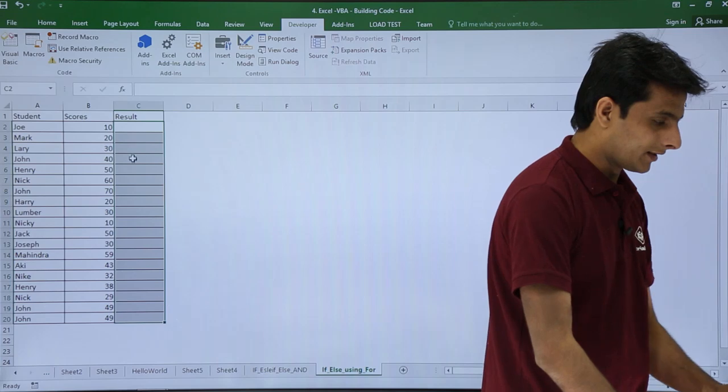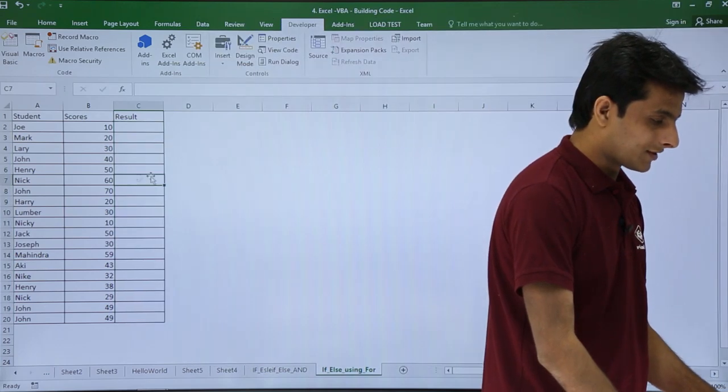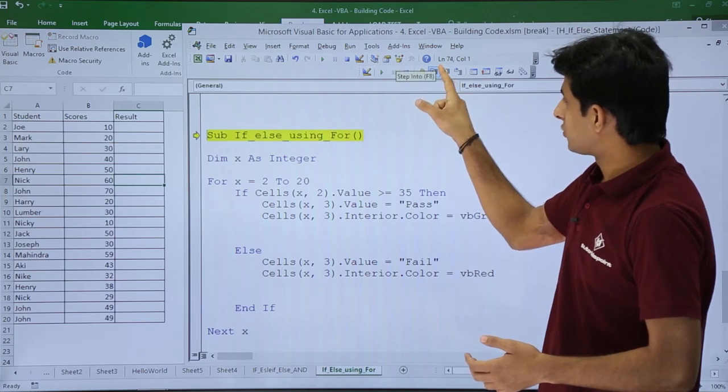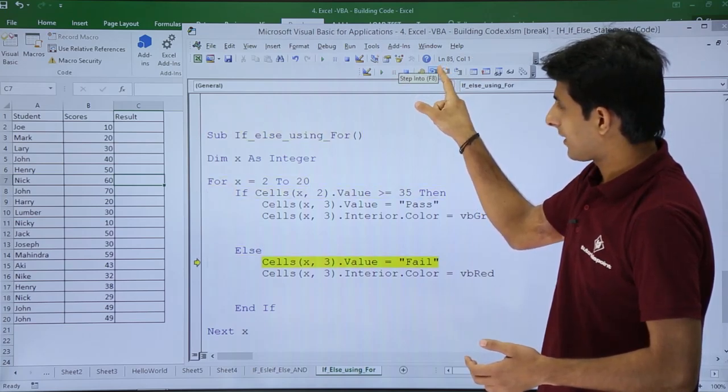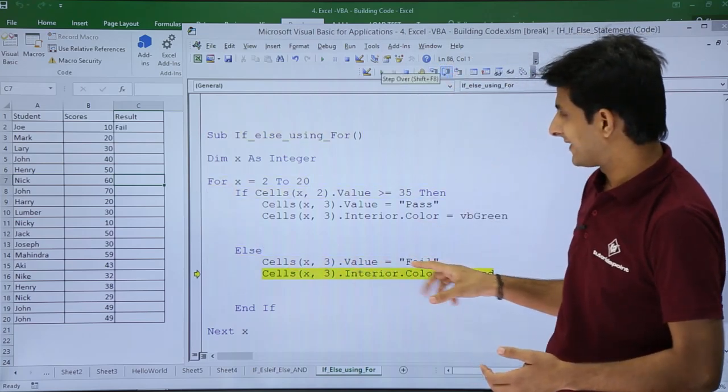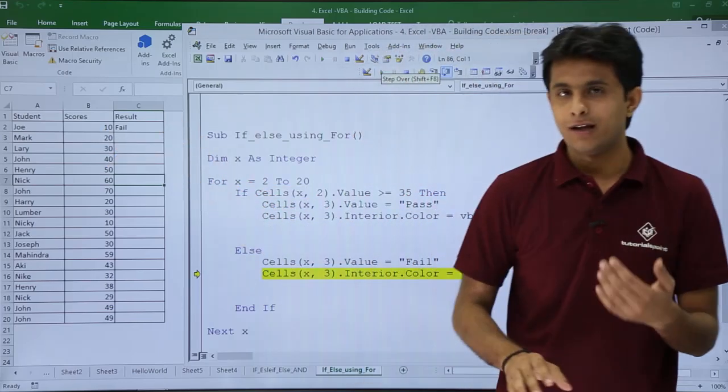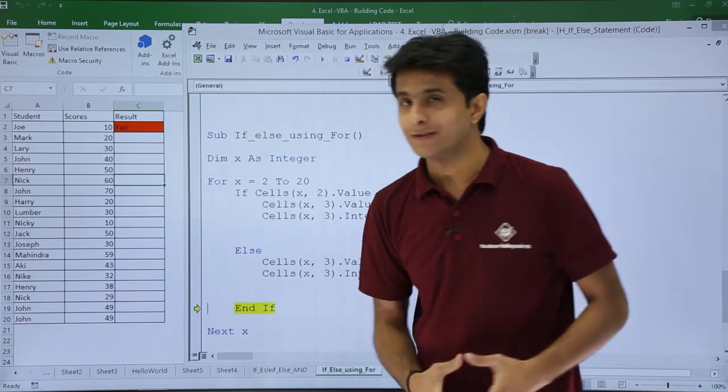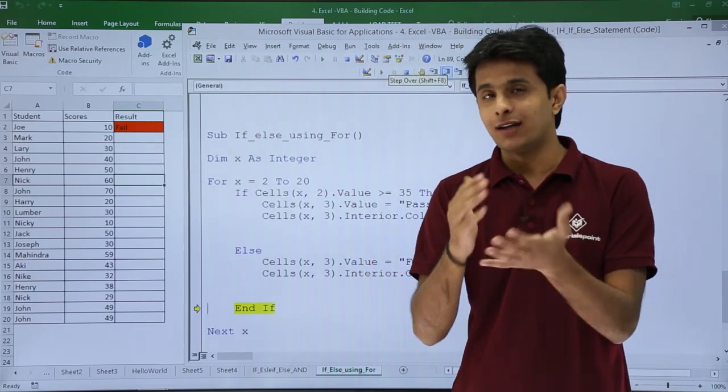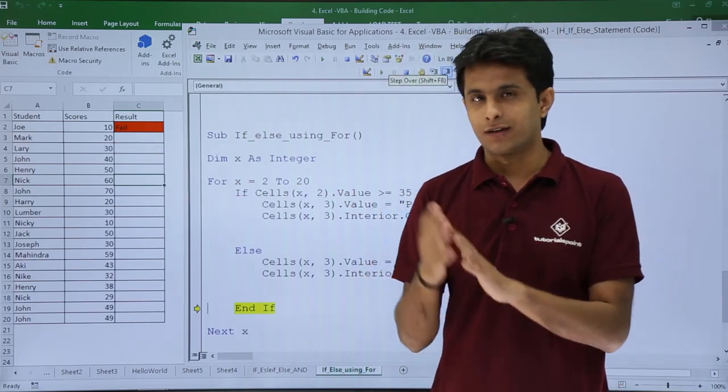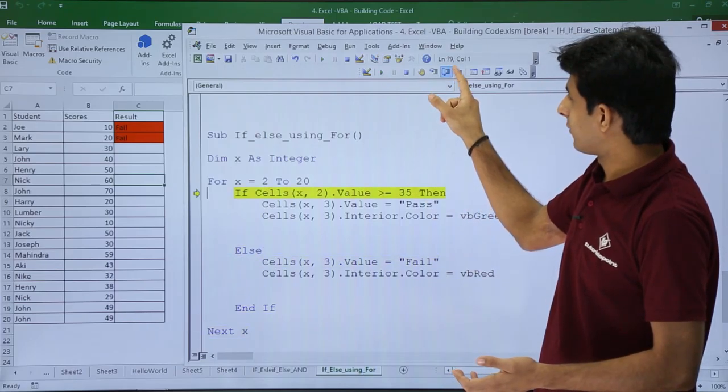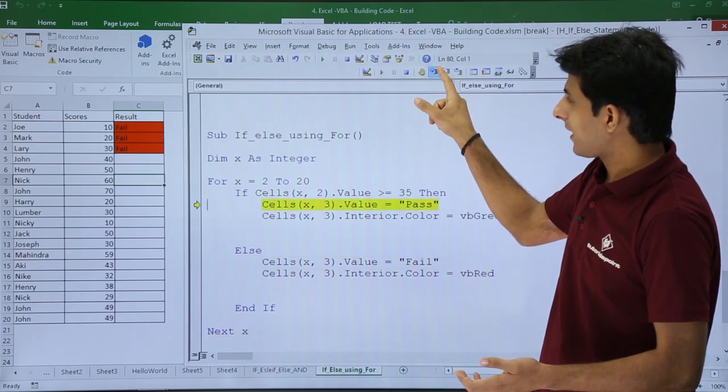I'll delete the result and execute this step by step. Step into, first line is executed - 10 is given as fail with interior color as red. You see the color is given as red, so I can easily understand red color means fail, green color means pass. If I execute again step by step, the second one, third one, now the fourth one is showing as pass.